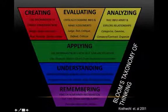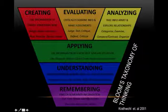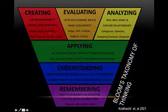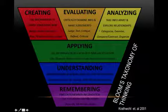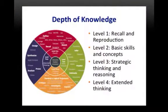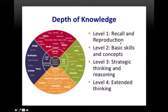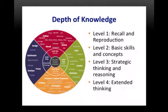Within these taxonomies, it goes from remembering, understanding, applying, analyzing, evaluating, and creating. The first three are considered somewhat lower, but each level gets higher, and the last three are all high-order thinking skills. I also heard that you've been introduced to the depth of knowledge by Norman Webb. This also works — he says there are four levels: recall and reproduction, basic skills and concepts, strategic thinking and reasoning, and extended thinking. These are two approaches that basically accomplish the same thing.